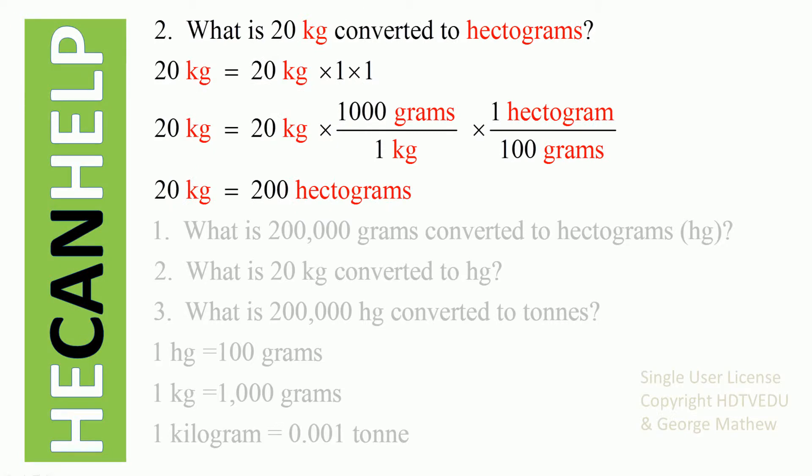Question number two: what is 20 kg converted to hectograms? Here we have a problem — we are given the conversion from hectograms to grams and from kg to grams, but we are never given a direct conversion from kg to hectograms. So what do we do? We multiply by one.